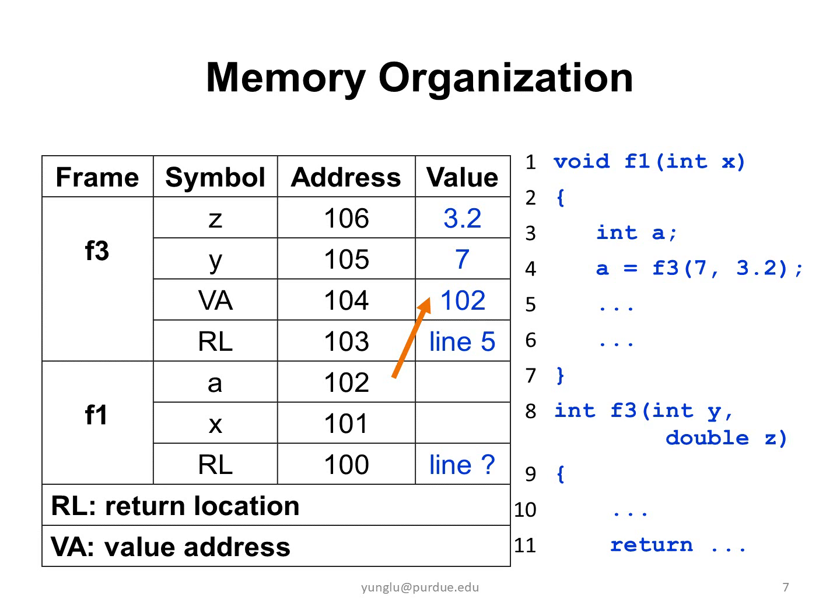Please notice how I present the stack memory. The first column is the frame. Each function has its own frame. This example does not show the caller of F1. Thus, the return location is marked by a question mark. Also, I am not marking the value of X here. Instead, let's focus on the frame of F3 in this example.